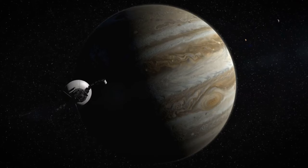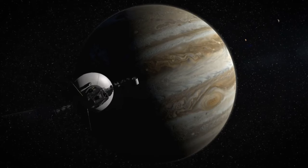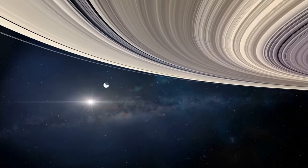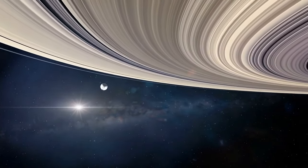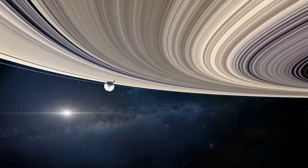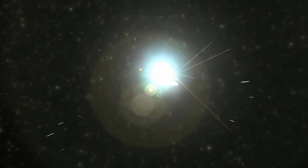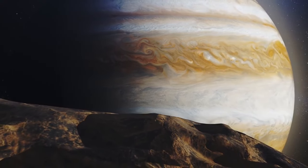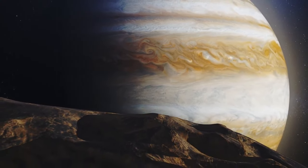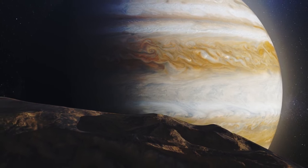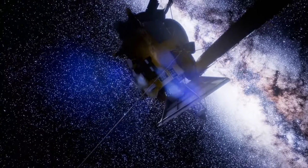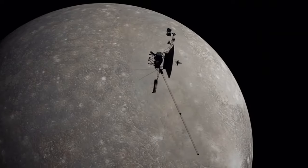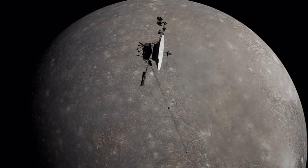Launched in 1977, these probes have been journeying beyond our solar system, carrying the golden record filled with sounds, images, and greetings from Earth. Voyager 1, now in interstellar space, has been faithfully sending data back to Earth. Its discoveries have been groundbreaking, from finding new moons around Jupiter and Saturn to providing detailed images of these distant worlds. But this recent message is different. It's not just data, it's a potential communication.